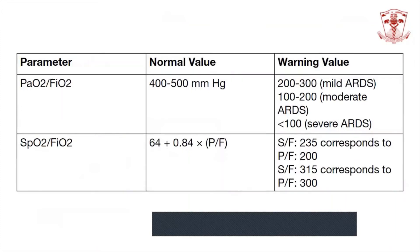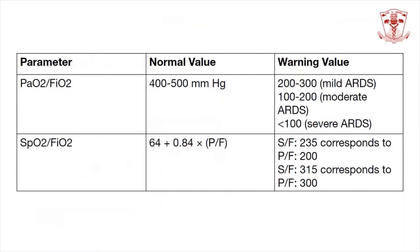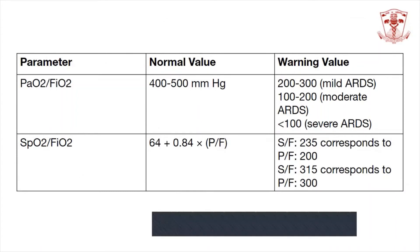The PF ratio is the ratio of partial pressure of oxygen to fraction of inspired oxygen concentration. The normal value is 400 to 500. Values below 100 are suggestive of severe ARDS associated with COVID-19 pneumonia, and values between 200 to 300 are suggestive of mild forms of ARDS. Another parameter used in COVID management is the SF ratio — the ratio of oxygen saturation to fractional oxygen concentration. An SF ratio of around 235 corresponds to a PF ratio of 200, and therefore an SF ratio below 235 denotes moderate to severe ARDS.